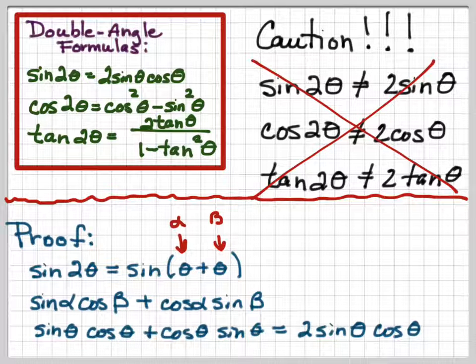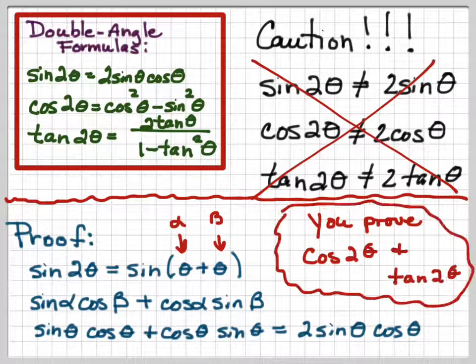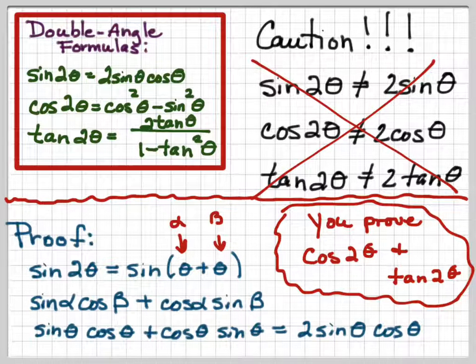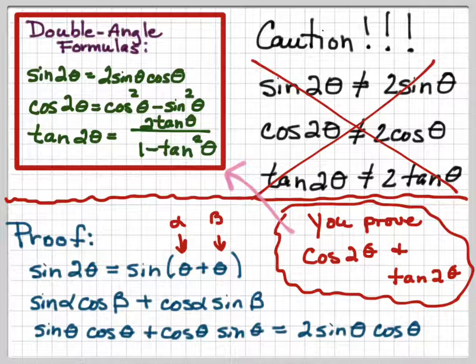Very simple proof. What I want you to do on your own is prove cosine 2θ and tangent 2θ — prove that they're equal to what it says in the box for their double angle formulas.